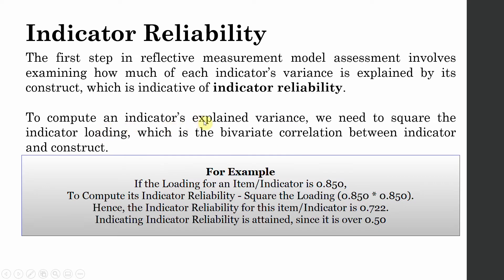To compute an indicator's explained variance, we need to square the indicator loading, which is the bivariate correlation between an indicator and the construct. To get your indicator reliability, you simply take the square of your loading. The loading tells you how well a particular item is representing the underlying construct.